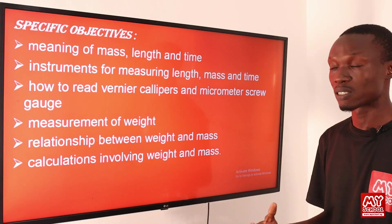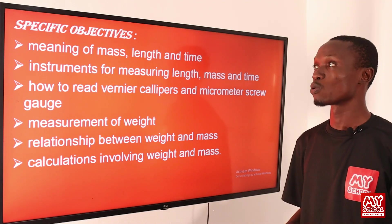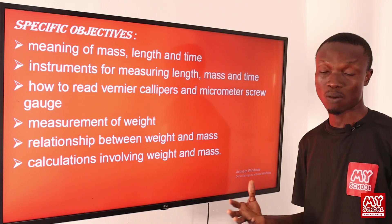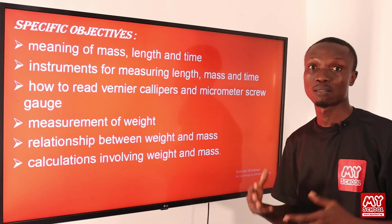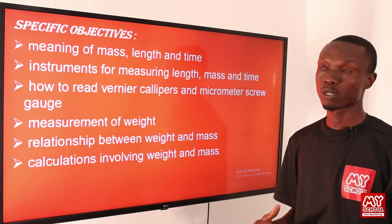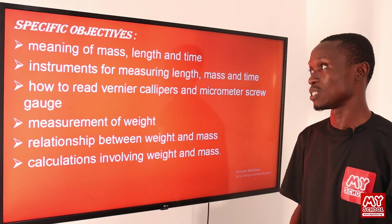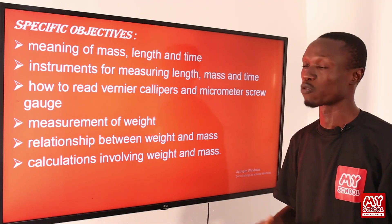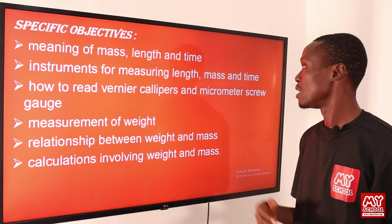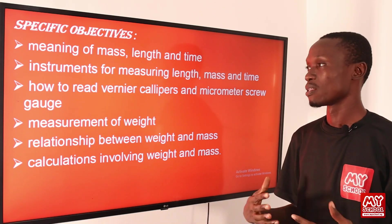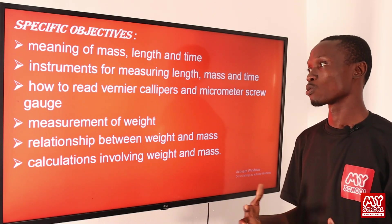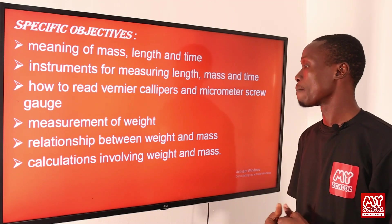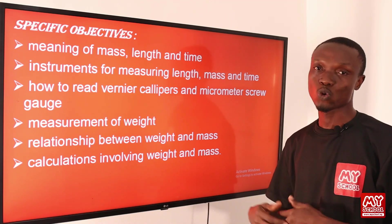So at the end of this lesson, we should be able to: one, state the meaning of mass, length and time, which are the three basic quantities in physics. Two, we should be able to identify the instruments for measuring length, mass and time. Three, we should also be able to know how to read the vernier calipers and the micrometer screw gauge.